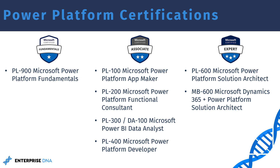We then move to the middle section, which is the associate level certifications. These are certifications for users who actually develop within the Power Platform, and there are different roles here as well. There's App Maker, which is a very basic way to understand how apps and workflows are developed. You then have a functional consultant where you basically apply your app, workflow, and Power BI reports towards a use case or a project. You then have a divergence with PL 300 and DA 100, which is actually the same certification, really focused on Power BI and how you can use Power BI as a data analyst. And finally, you have PL 400, the highest level associate certification for the Power Platform, where you develop full solutions combining Power Apps, Power Automate, Dataverse, Virtual Agents, and Power BI together in one cohesive solution.